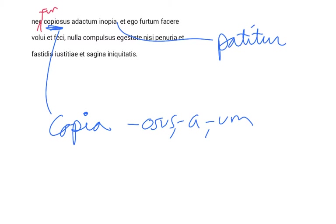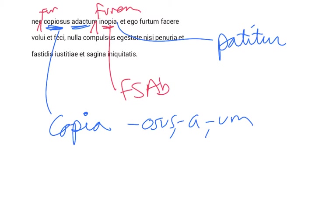Does he suffer or tolerate — ad actum — here we have to add the object furem. Nor does he tolerate a thief that is driven, ad actum inopia, by lack or by want. This is feminine singular ablative, an ablative of means with ad actum. Ad actum in turn is a participle from the verb adigo, adigere, a third conjugation verb. Nor does a rich thief, copiosus, tolerate a thief that is driven by want or lack.